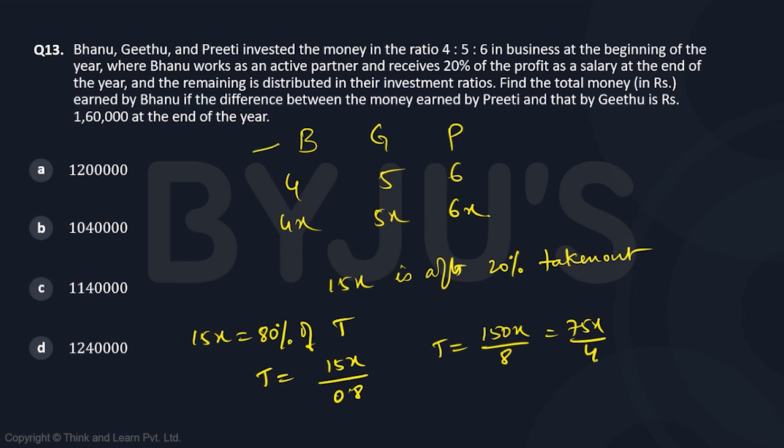In this year B, that is Bhanu, gets 20% salary. So 20% of this basically means into 7.5 by 4, so 15 by 4x will be the salary. If you take out 15x by 4 you will be left with 60 by 4 which is 15, that is what we have got. 15x now gets divided into these three people. That is what happened.